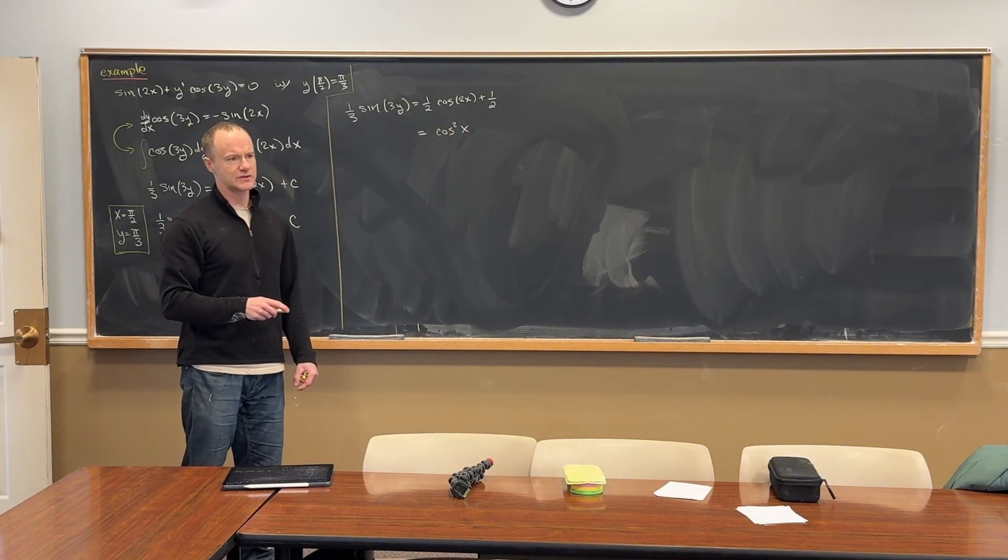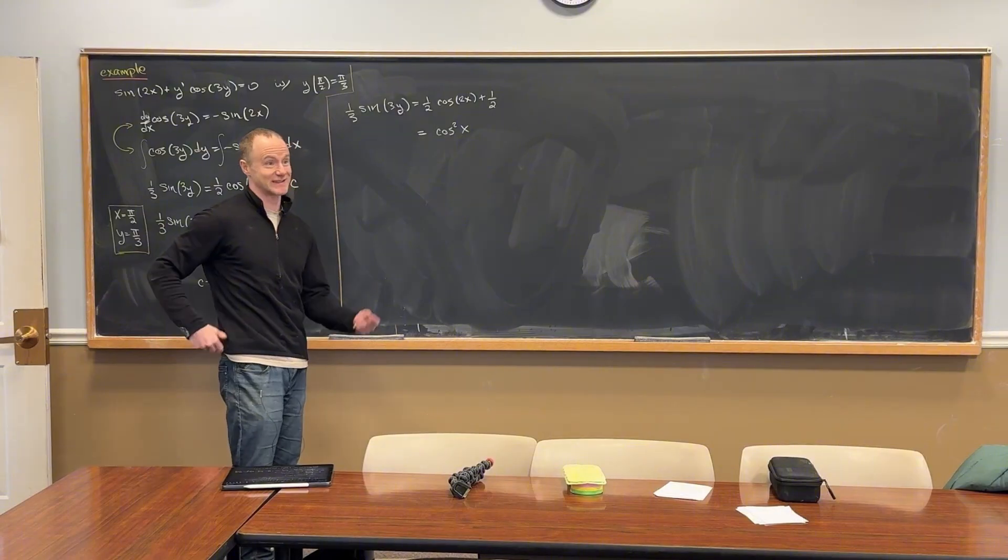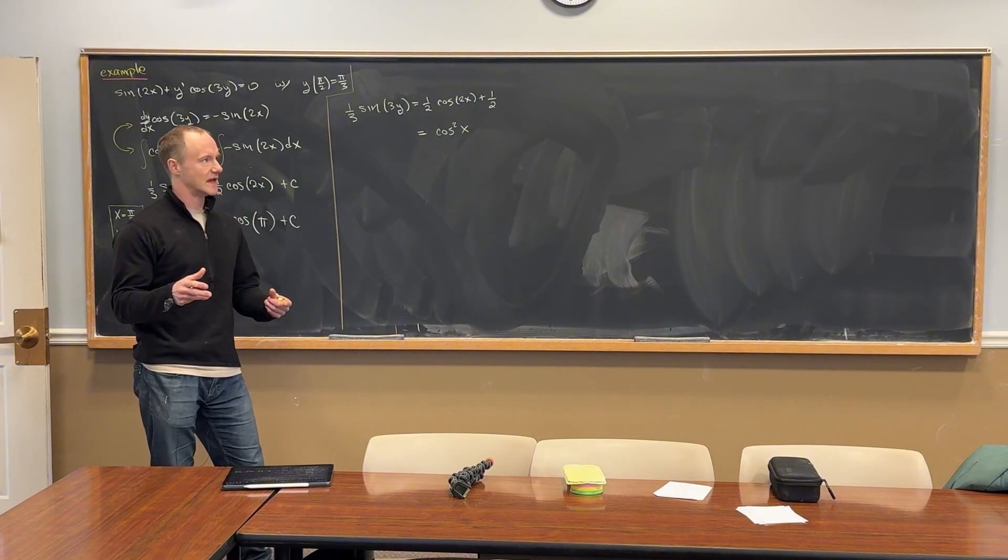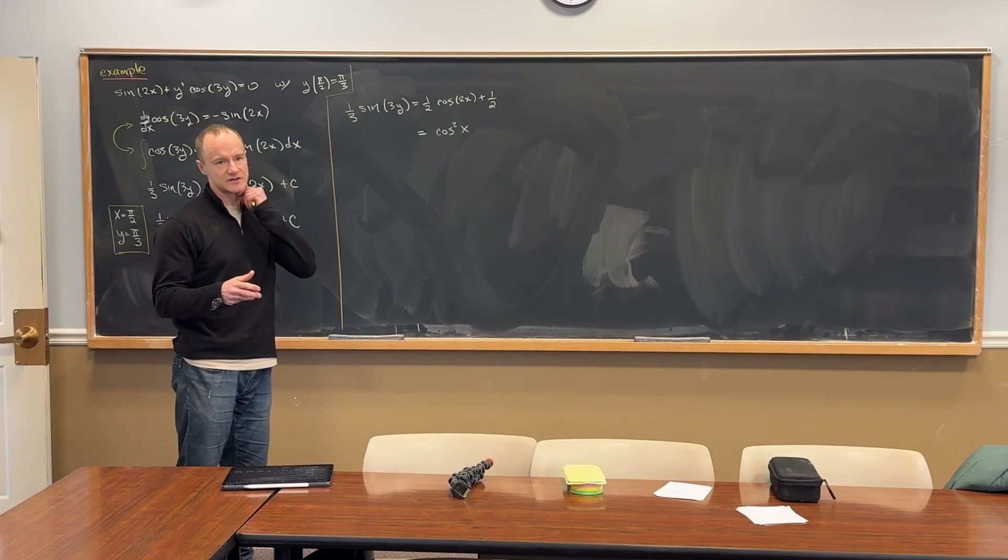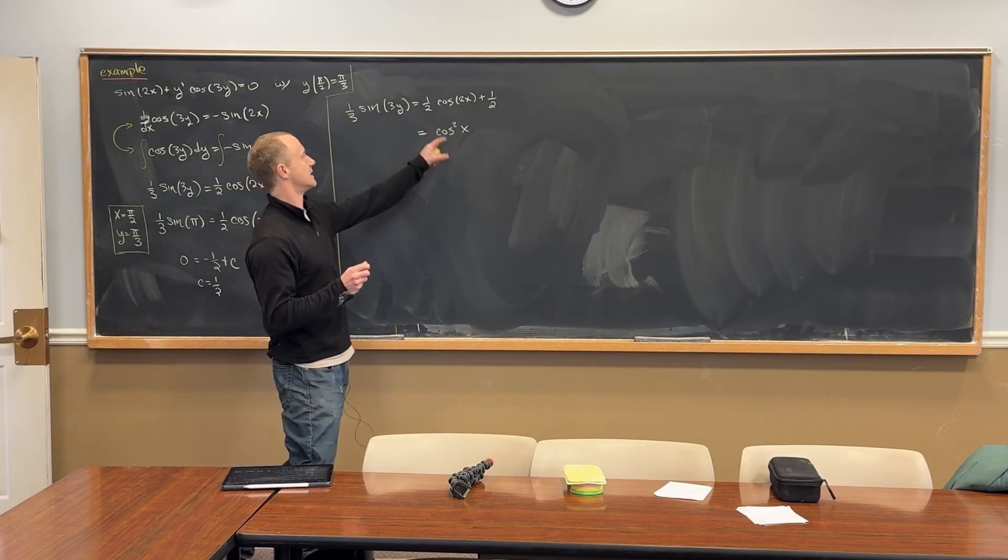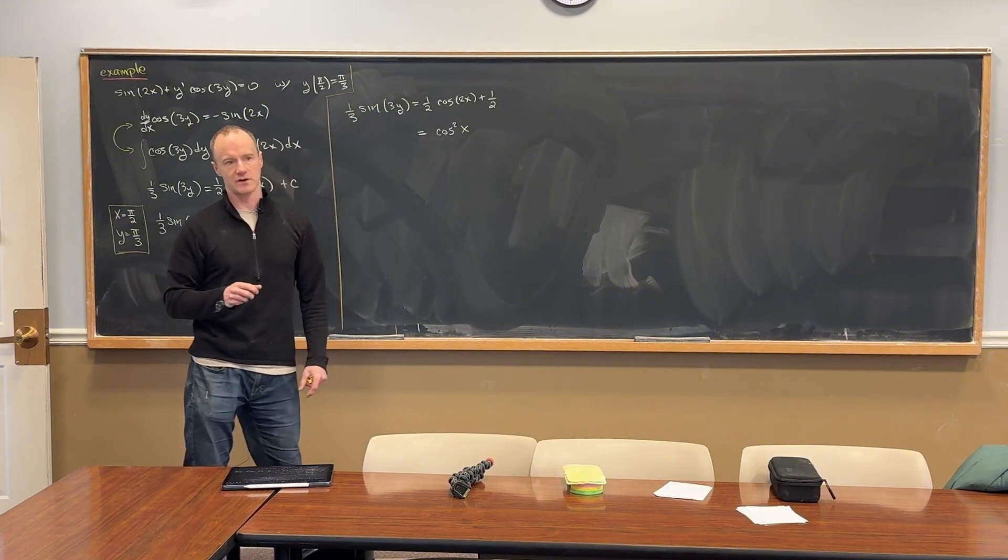Yeah, so if you took a calculus two class, which I guess everyone did, there's this part where you're doing integrals of even powers of trig functions, and then there's this power reducing formula for sine and cosine. And this is the power reducing formula for cosine.